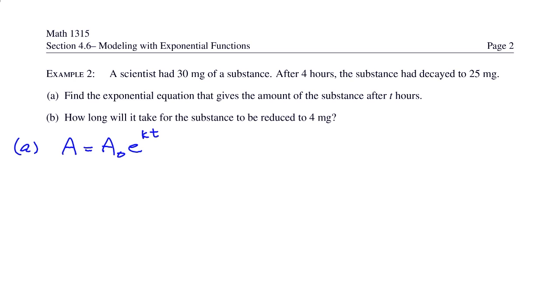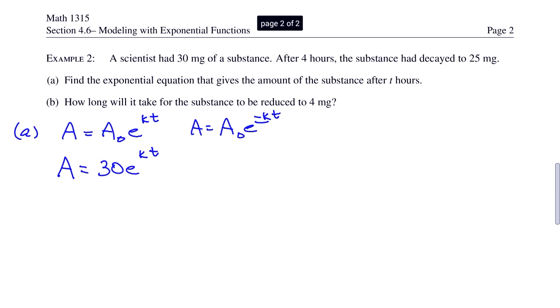So again, we're going to use A equals A naught e to the kt. Now some people, and I believe this is the way it's done in your book as well, they go ahead and throw in a negative on the k. It doesn't matter. You're going to come up with a negative exponent in this spot if it's decay. So you can do it now or you can do it later. It doesn't matter. I'll stick to the way that I do it. So the initial amount is going to be 30 milligrams. That's what you're starting with.